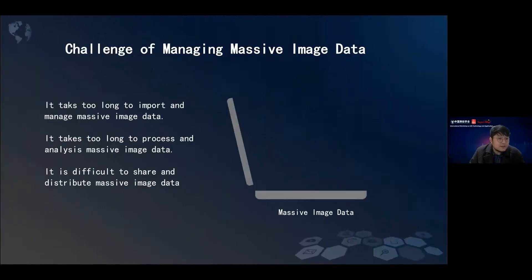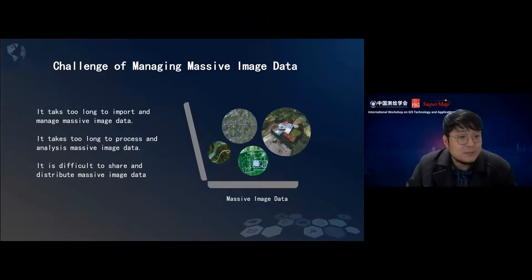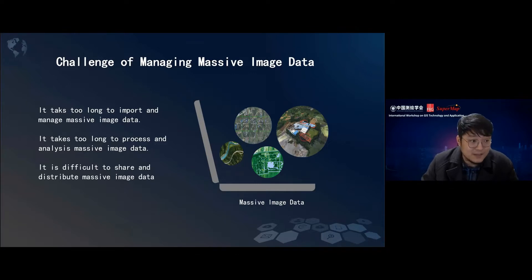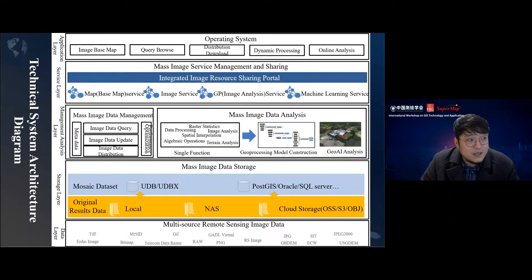If you need to deal with a large amount of GIS data, including massive image data, you must have encountered challenges such as: it takes too long to import and manage massive image data, it takes too long to process and analyze this data, and it is difficult to share and distribute massive image data. Based on those challenges, we provide a technical architecture for image data management.